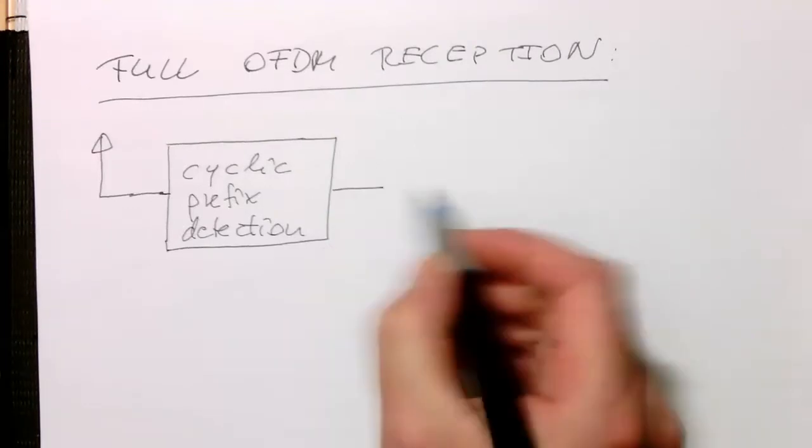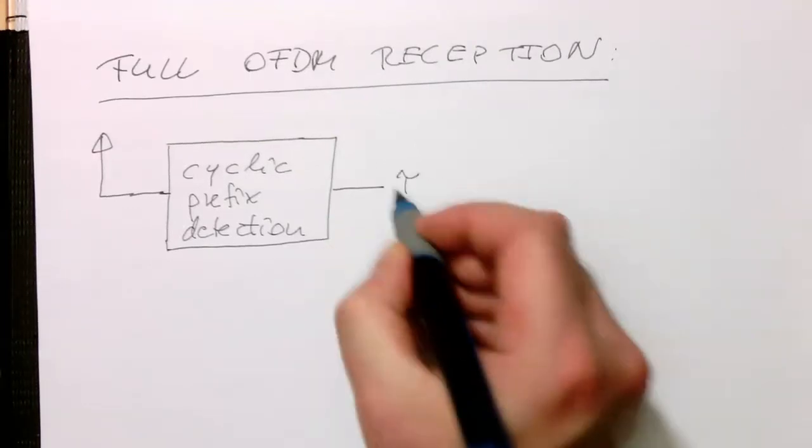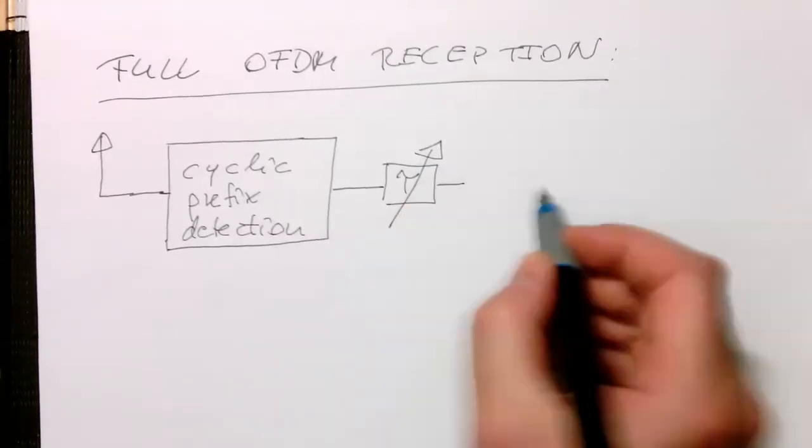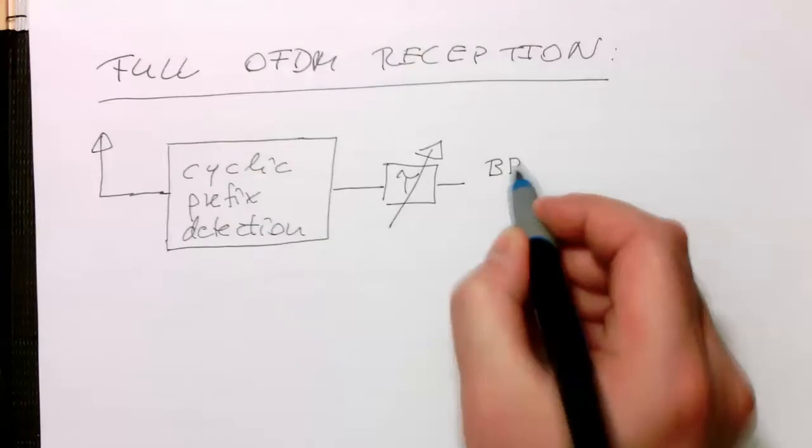And so then we have a variable delay here, so that can be changed. Then we've got our bandpass demodulator.